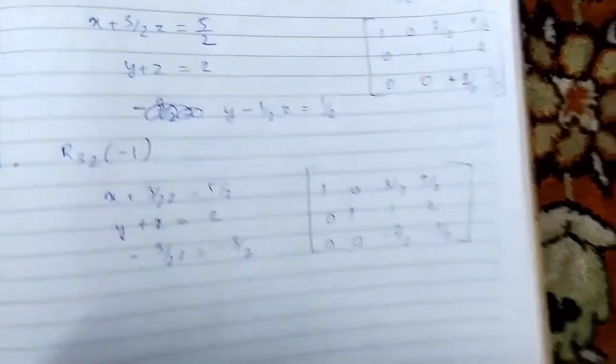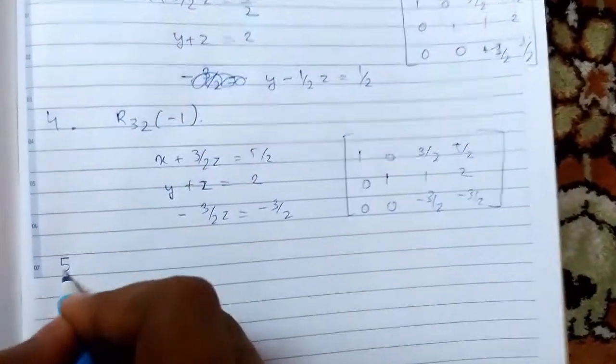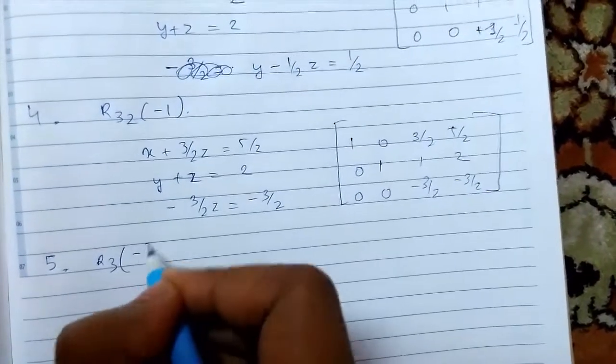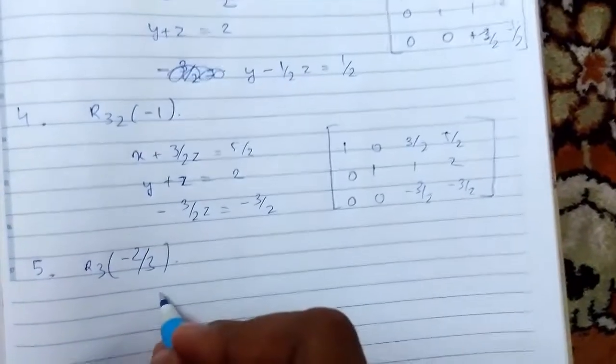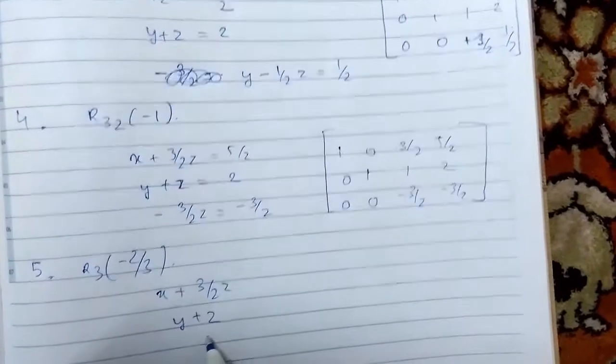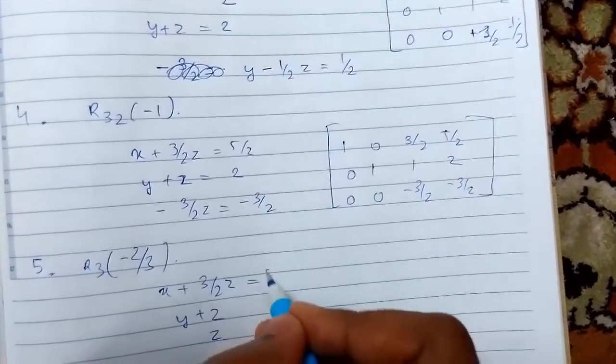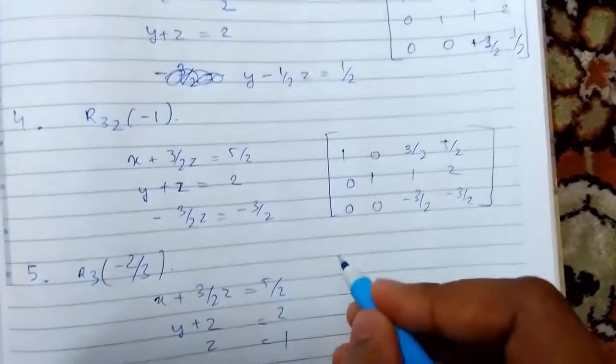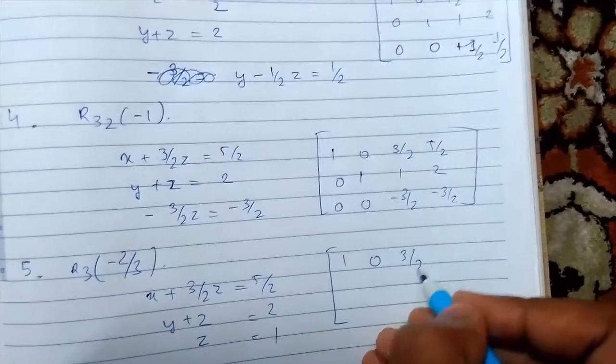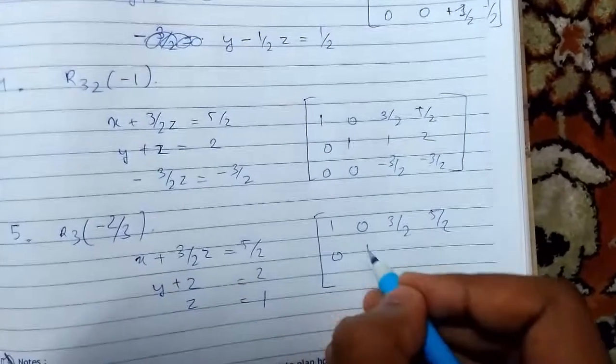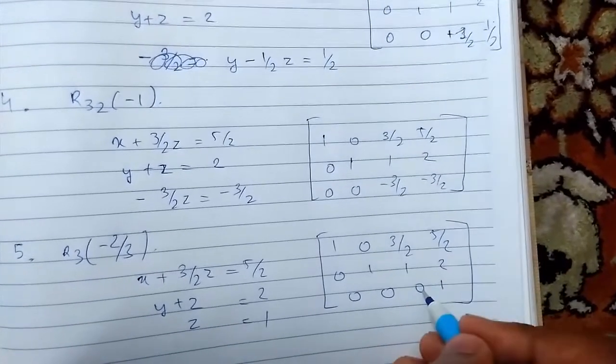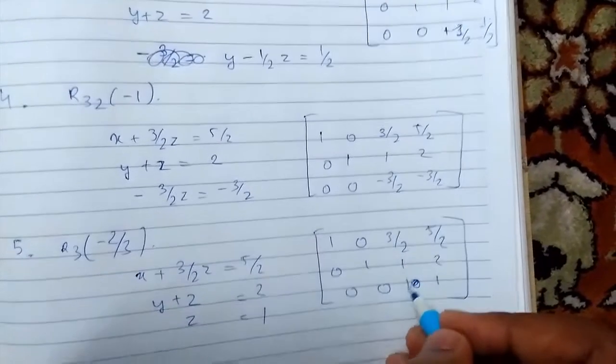Now we will just perform the last step and we will get - multiply the third equation by minus 2/3. We are basically just eliminating one variable in each step. That will give us the simplified upper triangular form. So 1 0 3/2 5/2, 0 1 1 2, and 0 0 1 1.